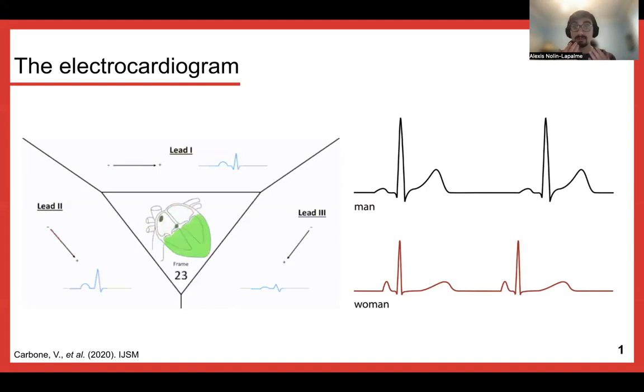However, throughout the years, we've also been able to determine that the ECG also yields more information about the individual itself. For example, here being reviewed by Carbone et al., we see that there's differences between males and females, while males will have a higher amplitude, while females have a smaller amplitude and faster heart rate.